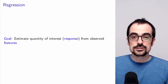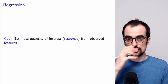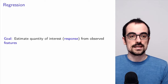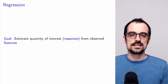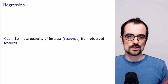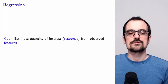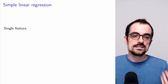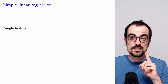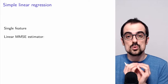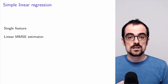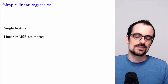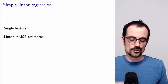Now we're going to talk about regression and return to this geometric perspective, because it allows us to solve the linear regression problem in the case of a single feature. The problem of regression is that of estimating a quantity of interest — a response — from observed features. In simple linear regression, we have a single feature and restrict ourselves to an affine estimator, though people commonly call this the linear minimum MSE estimator.